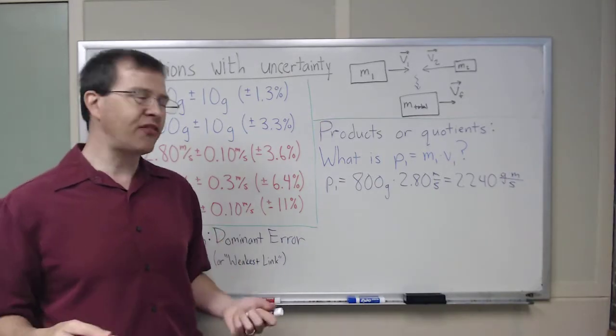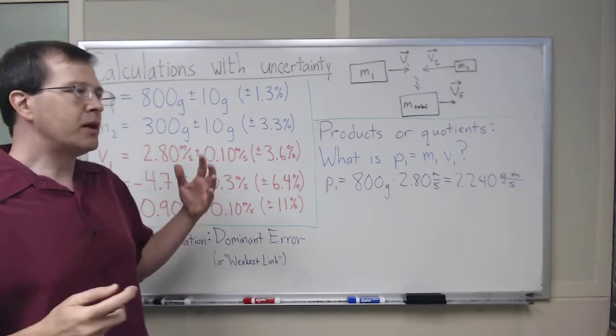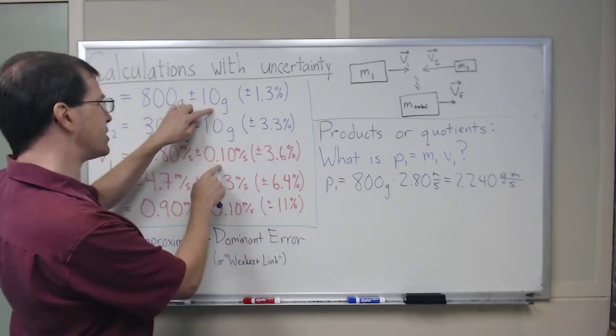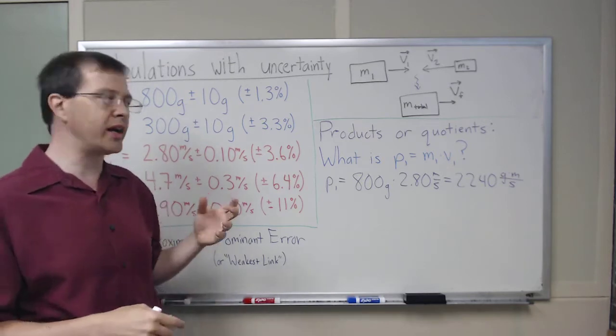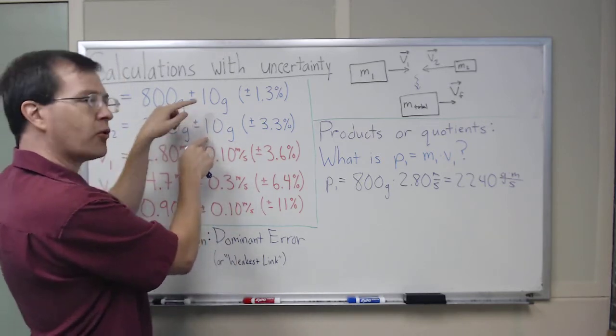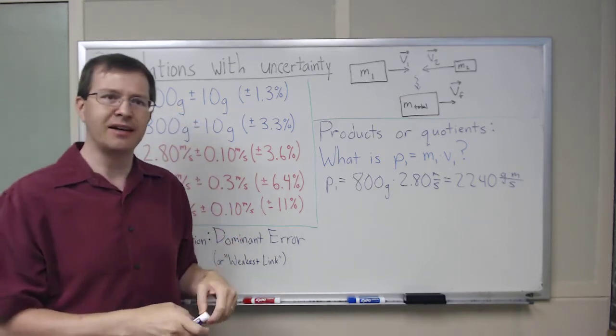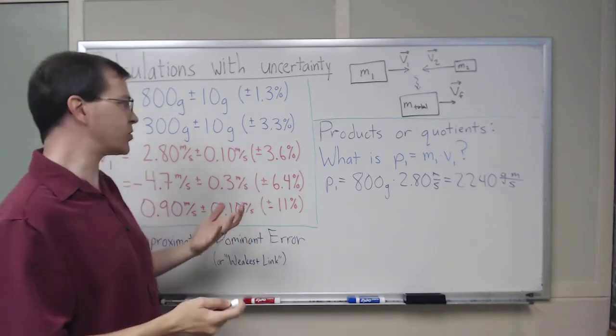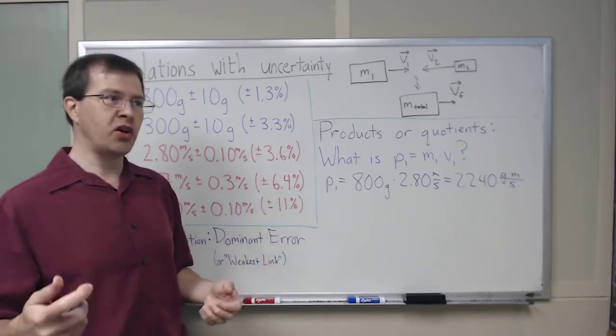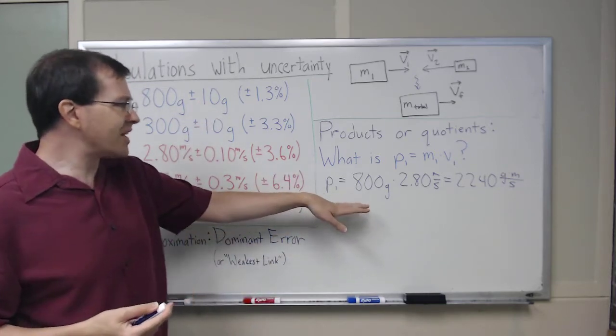Now I need to figure out the uncertainty in this momentum. With sums and differences, I was able to compare the uncertainties, the absolute uncertainties in the two quantities. I compared these two, and I could compare them because they were both in grams. Here, I can't even compare these. One's in grams, one's in meters per second. That's comparing apples and oranges. I can't say which one's bigger. Which is bigger, 3 or blue? It doesn't make sense. I need something else to do.